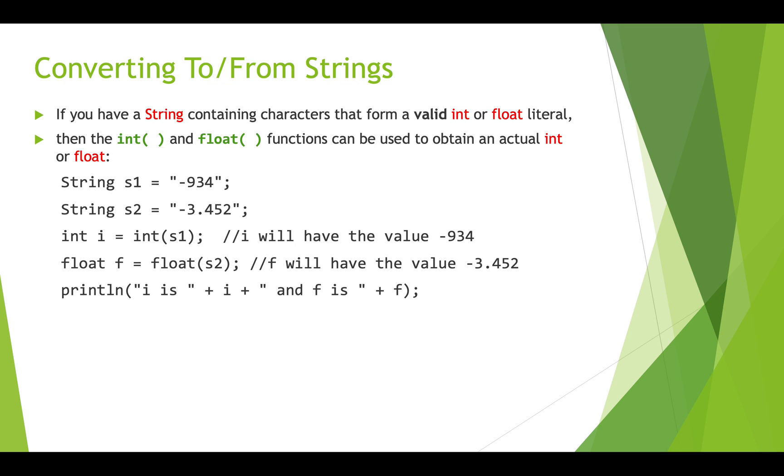Strings that actually represent numbers that are valid numbers can be converted into integers and this is like harder to do and it only works if the string really does represent a valid number. So in this case here we have string s1 and it's the string in quotations negative 934 and here we have a sort of a float number as a string negative 3.452. These are in quotations. These are being stored as strings of characters by processing. If we want to actually put these into int and float variables then we can call the int or the float functions that we've already learned about from processing. We know that these are like processing's version of casting and here I will get the value negative 934 the number and f will get the value negative 3.452.